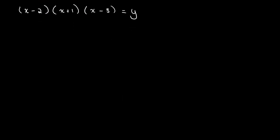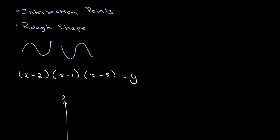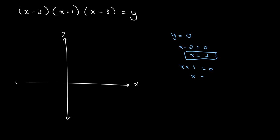Let's start by drawing our axes — y and x. The first thing we need are the intersection points: where does our graph cross the different axes? It crosses the x-axis where y equals 0. So: x minus 2 equals 0 gives x equals 2; x plus 1 equals 0 gives x equals negative 1; and x minus 3 equals 0 gives x equals 3. Those are our three x-intercepts.